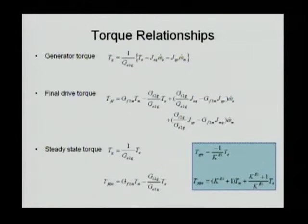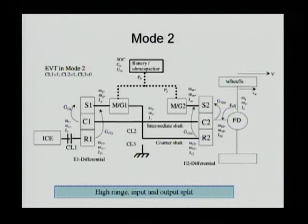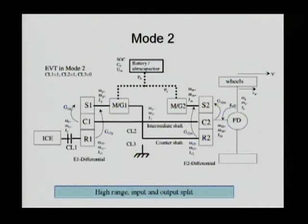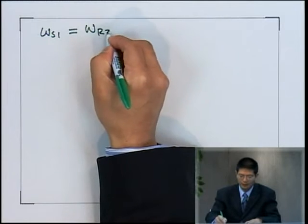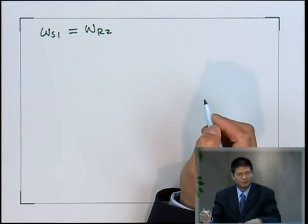The dynamic relationships have been derived, but if you eliminate the dynamic terms you get the same set of equations just derived. The second operation mode is the high mode. In this high-speed mode, CL2 is engaged and CL3 is open. When CL2 is engaged, omega_S1 is connected to omega_R2 — they have the same speed.